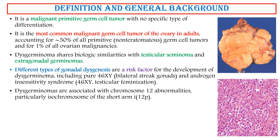Dysgerminomas are associated with chromosome 12 abnormalities, particularly isochromosome of the short arm, i(12p).